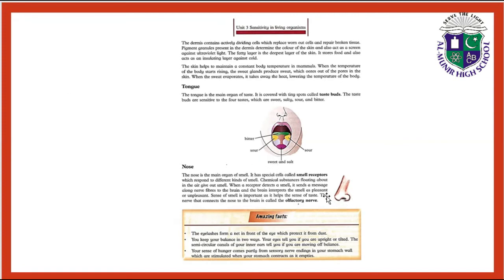The nose is also a sense organ — it is the main organ of smell. It has special cells known as smell receptors which respond to different kinds of smell. Chemical substances floating in the air give out smell. When a receptor detects a smell, it sends a message along a nerve fiber to the brain, and the brain interprets the smell as pleasant or unpleasant.